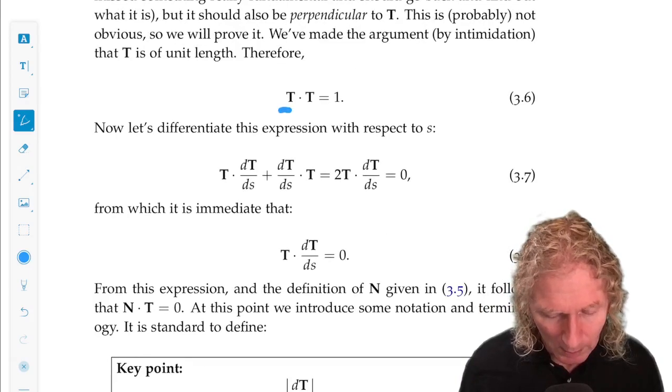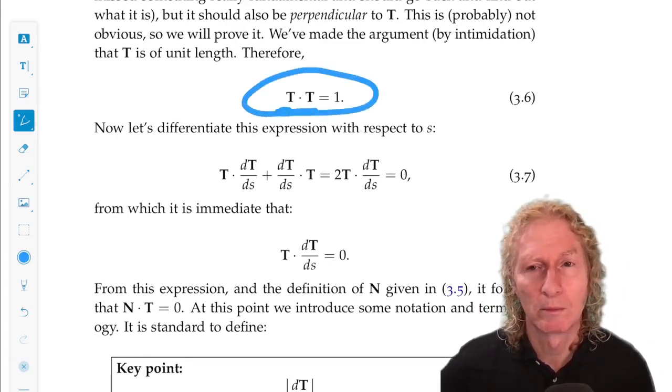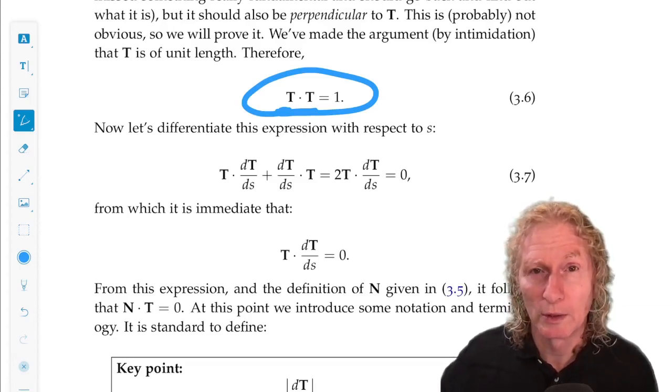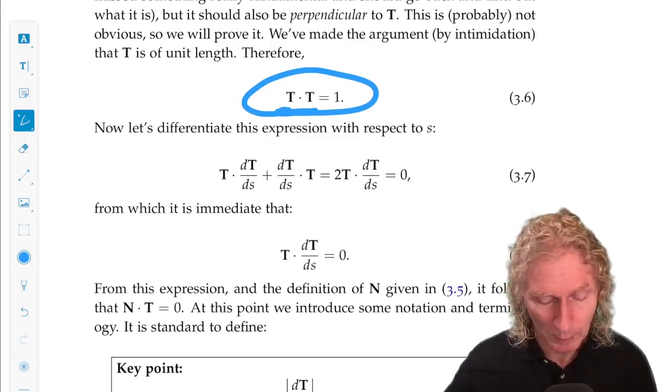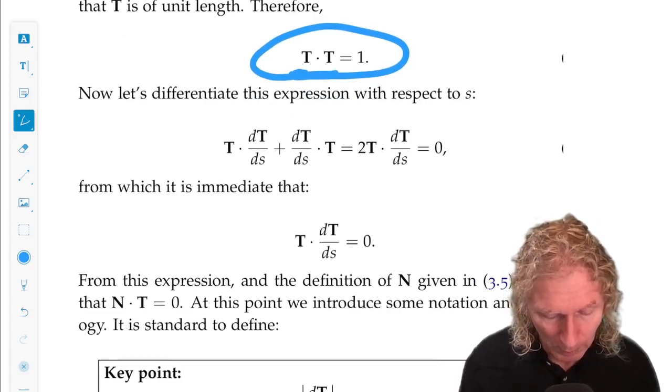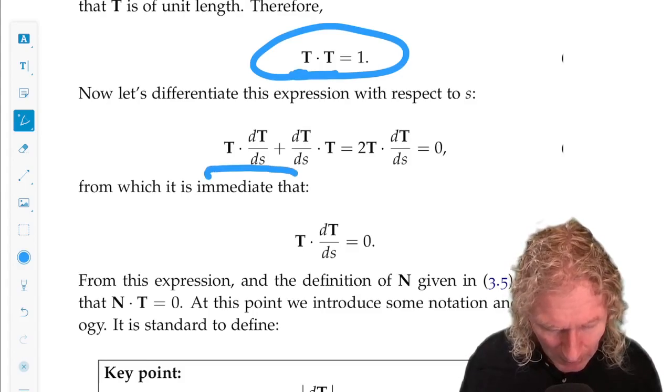And that's a little calculation. So we know that T is a unit vector by its very nature, and we differentiate this relation. Remember we have the product rule for differentiation for dot products. Derivative of 1 is 0, and we get this.